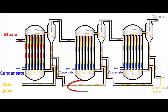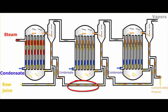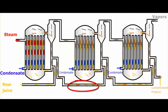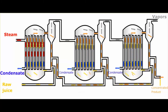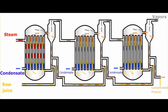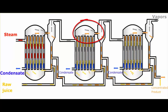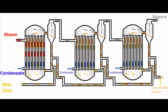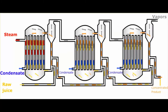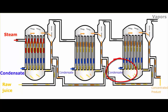The concentrated stream from the first effect is then fed into the second effect at the bottom of the heating section and it rises through the heating section to the top. Again more vapors will come out of the liquid stream, and those vapors from the second effect are then passed into the third effect as the heating medium, where they will discharge their heat and the condensate will leave at the bottom of the heating section.